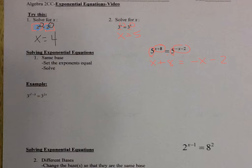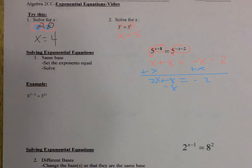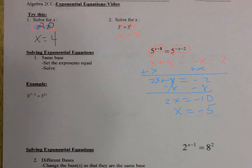Now you're just going to solve this. I'm going to add x: 2x plus 8 equals negative 2. Then subtract 8: 2x is equal to negative 10. So x is equal to negative 5.